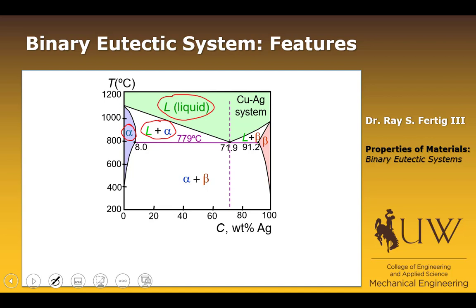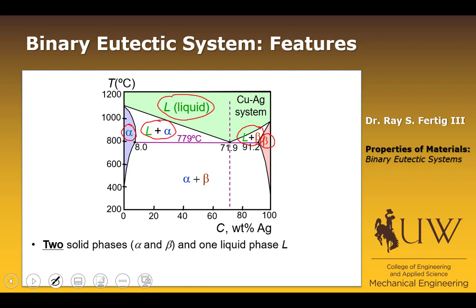One of the features that distinguishes a binary eutectic system from a binary isomorphous system is that there are two solid phases. So we don't just have alpha — we now also have beta. That gives us some additional phase regions, including beta plus liquid. Alpha itself is a solid solution of silver and copper, and beta is also a solid solution of silver and copper — two separate phases, each containing silver and copper, combined together in this single solid material.